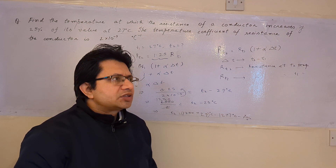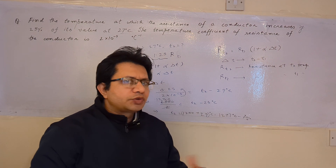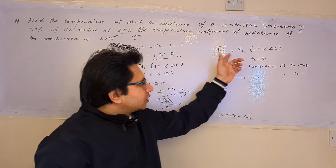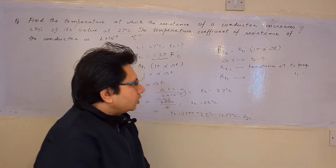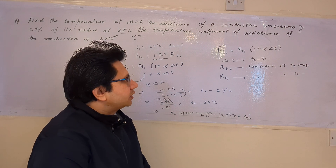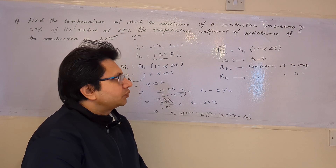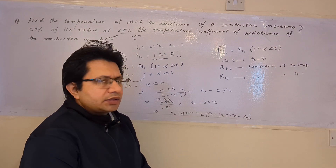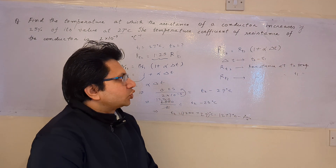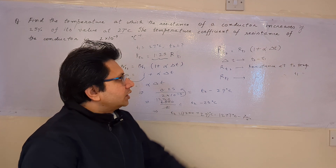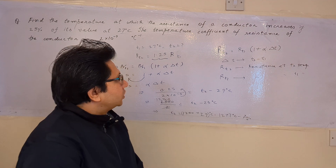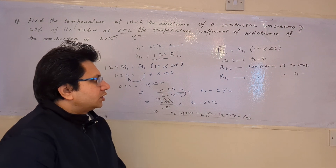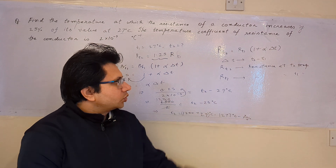To summarize: since the resistance increases by 25 percent, we set R_T2 equal to 1.25 R_T1. The basic formula used is R_T2 equals R_T1 bracket 1 plus alpha delta T, where R_T2 is the resistance at T2, R_T1 is the resistance at T1, alpha is the temperature coefficient of resistance (positive for conductors), and delta T is the final minus initial temperature. Substituting all values gives T2 equal to 1277 degree Celsius.